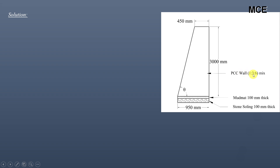The mix is 1:2:3 to 2:6 — it's a plain cement concrete wall. It has a top width of 450 mm and a height of 3000 mm. We have to find the bottom width, which is shown as 950 mm in the figure. Below the bottom of the wall we lay plain cement concrete called the mud mat — mix 1:4:8, 100 mm thick — and below that we lay stone soling, also 100 mm thick.